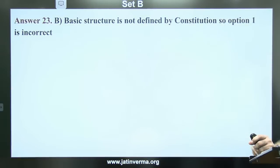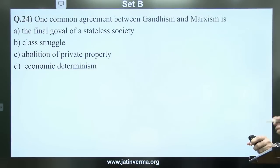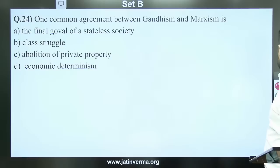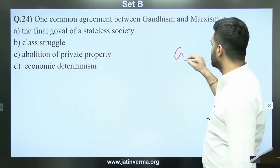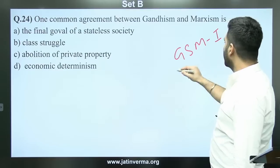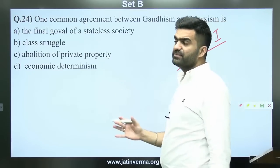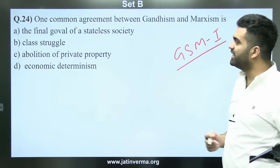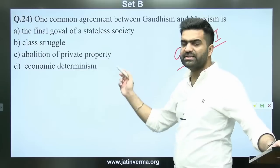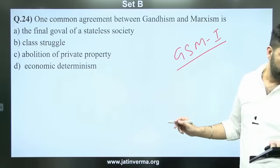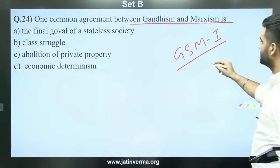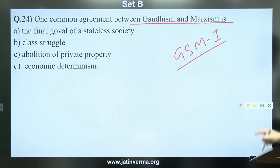Question 24: One common agreement between Gandhism and Marxism is the final goal of a stateless society. This is a GS Paper 1 topic. Many coaching institutes create a false dichotomy between prelims and mains preparation — this wastes time. There is actually no difference between prelims and mains preparation. Karl Marx and Gandhism are both GS Paper 1 topics.